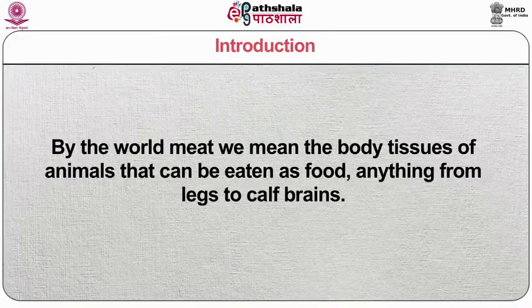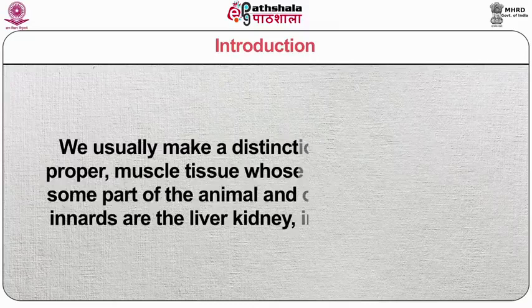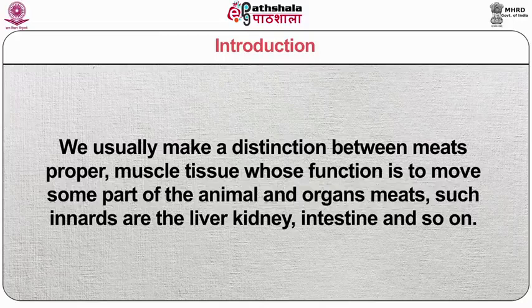Meat is muscle tissue. It is the flesh of domestic animals — cattle, hogs and lambs — and of wild animals and game such as deer. By the word meat, we mean the body tissues of animals that can be eaten as food, anything from legs to calf brains. We usually make a distinction between meat's proper muscle tissue, whose function is to move some part of the animal, and organ meats such as liver, kidney, intestine and so on. Of all the food we obtain from animals and plants, meat has always been the most highly prized.